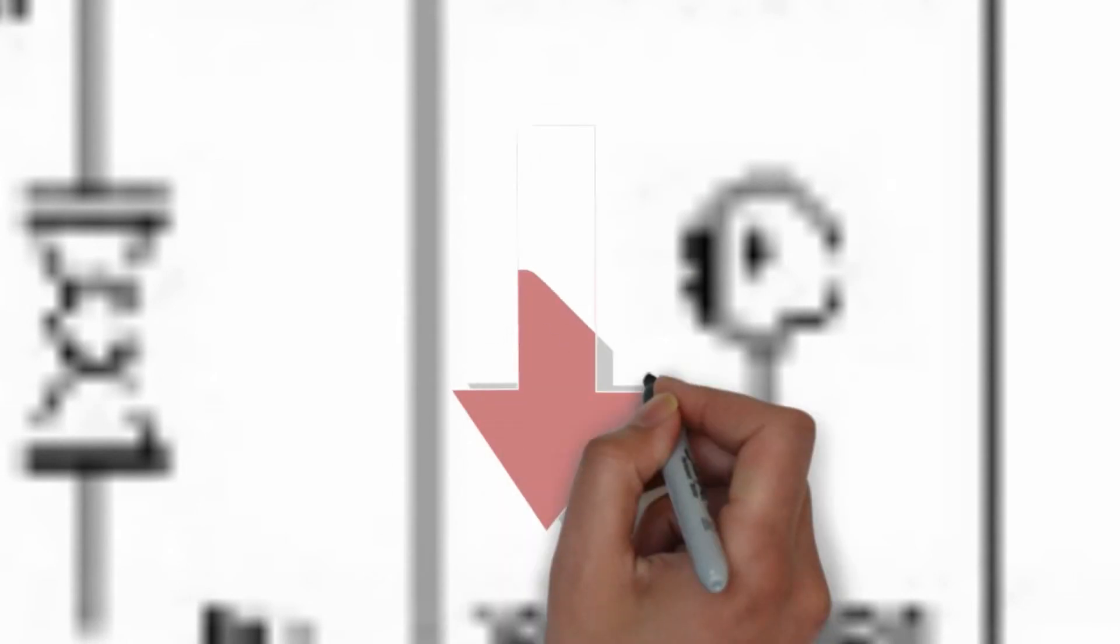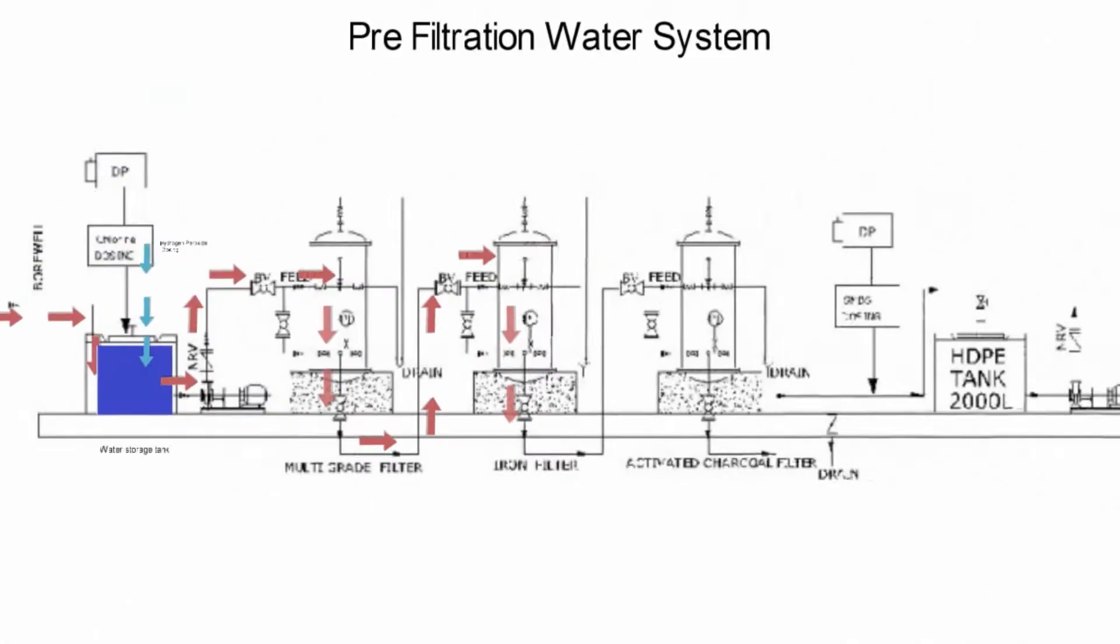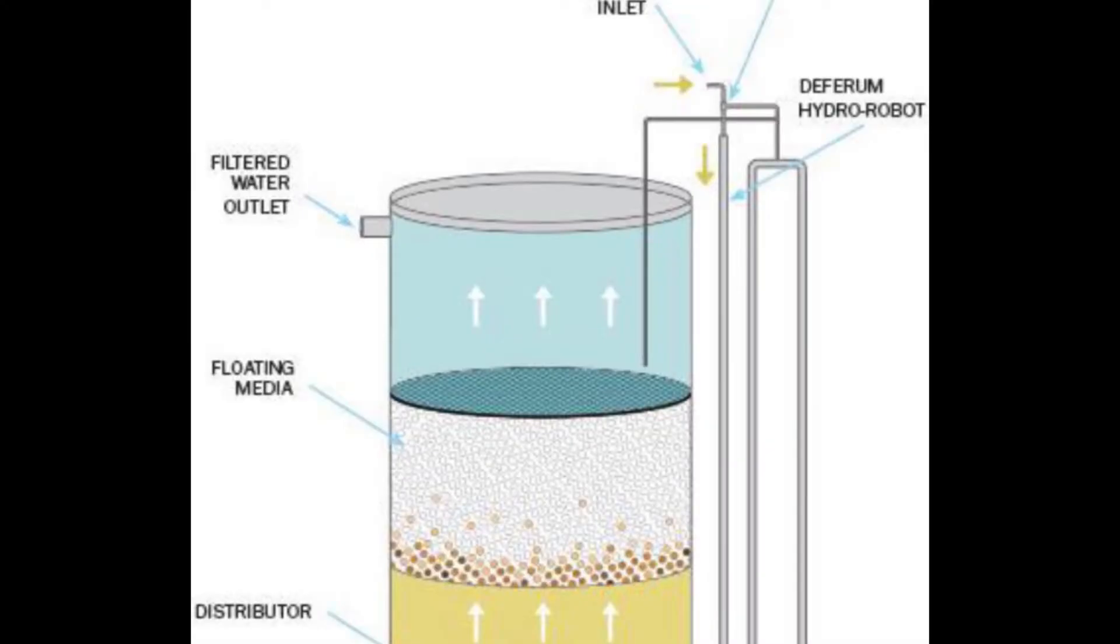Water from the multi-grade filter is then passed through iron removing filters. The process through which iron is removed from water is known as oxidation filtration, which involves oxidation of soluble forms of iron and manganese to insoluble forms, which are then removed by filtration.